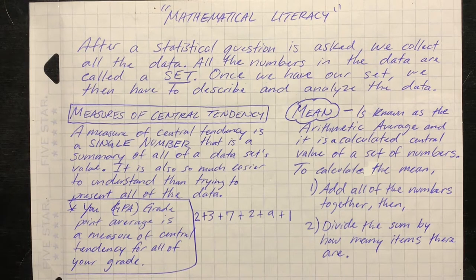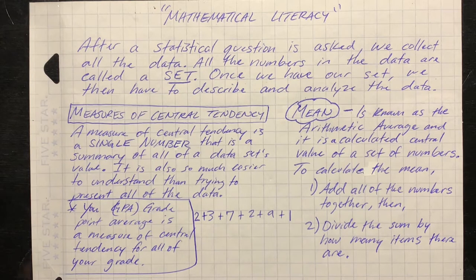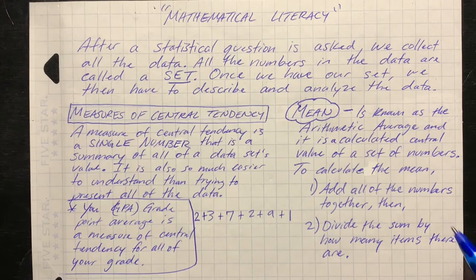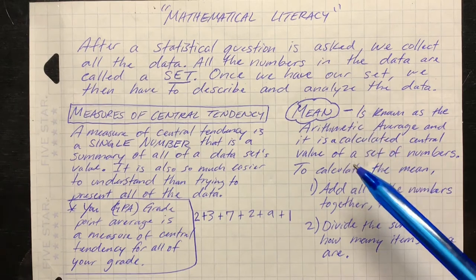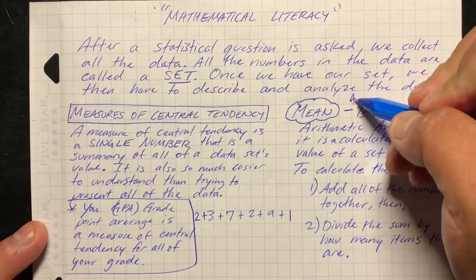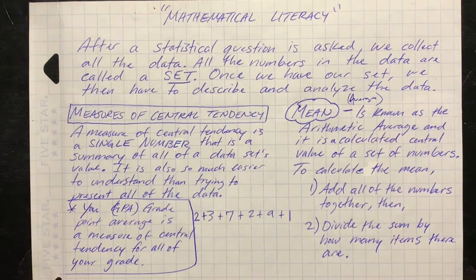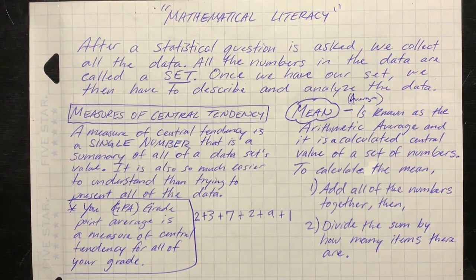Your grade point average, your GPA, is a measure of central tendency for everything you have done for your entire grade — from quarter one, quarter two, quarter three, and quarter four for the entire academic school year. One form of central tendency is the mean — not mean like when you're mad, but we're talking about a number, the average. The mean is known as the arithmetic average, and it is the central value of a set of numbers.